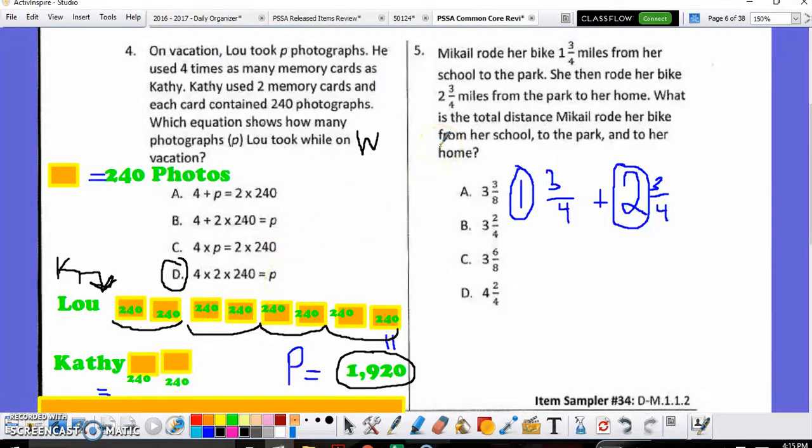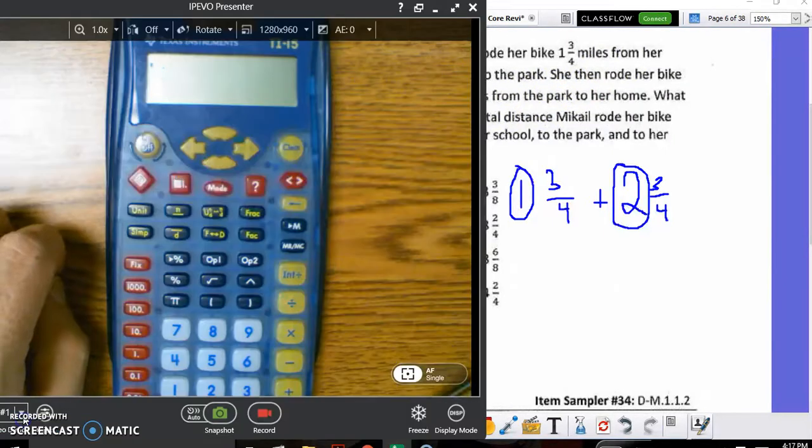Number five is another one where if you set up a KWS, you could be helpful. Or if you know how to just set up the equation like I have here and then plug it into a calculator, you're going to find the correct answer. So, I'm looking to add the mixed number one and three-fourths for the miles that she rode on her bike from the school to the park to two and three-fourths for the miles she rode from the park to her home. So, again, I can grab a calculator and see. To create the mixed number one and three-fourths in this calculator, I need to know how to use the calculator.